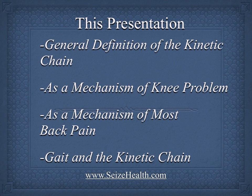This presentation contains four parts. First, a general definition of the kinetic chain. Second, though the back is more relevant, we'll talk about knee problems first because it's generally easier for people to appreciate. Finally, we'll go into gait. We'll spend a lot of time on gait across all the videos because it is the most important functional movement, and also a tremendous source of diagnostic information — from hamstring and flexor muscle strength to B12 deficiency to Parkinson's disease.